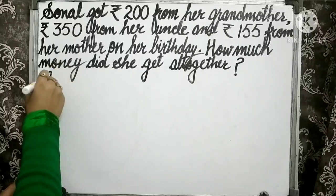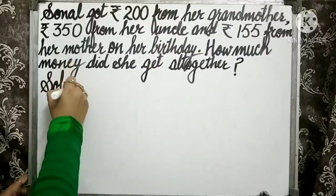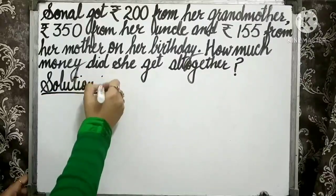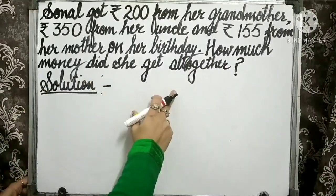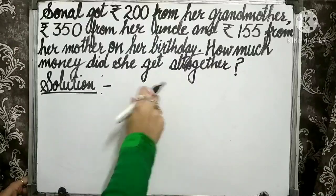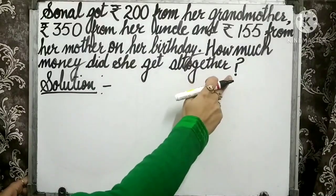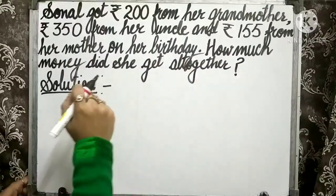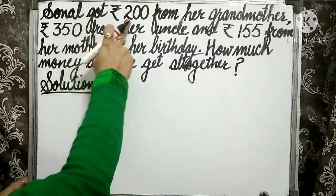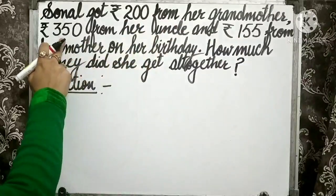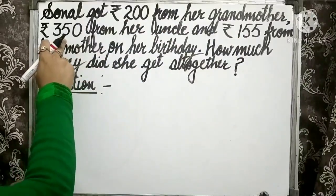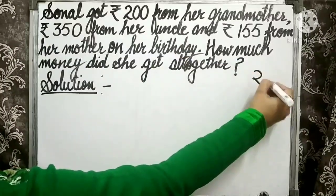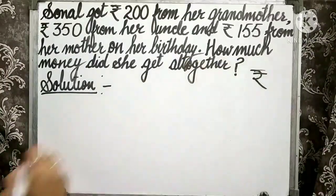Let's start with the solution part. Write 'Solution' or 'Answer.' Here we are solving the statement sum related to money, so we need to put the columns for rupees and paise. But here you can see that the figures of only rupees are given, so there is no need to make a column for paise — we have to make the column for rupees only.